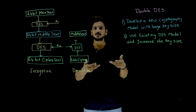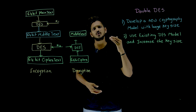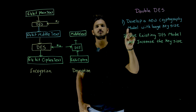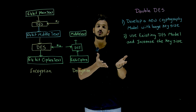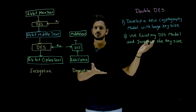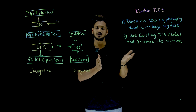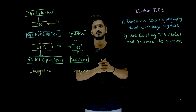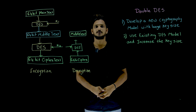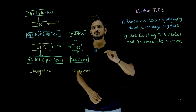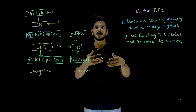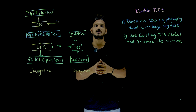So in order to increase the size of the key, we can do it in two ways. The first one is you develop a new cryptography model — why do we need to use DES? We can go with a new model with a large key size. Suppose you take 56 plus 56 = 112, a 2 power 112 possibilities key. If your key size is 112, it is going to take 2 power 112 possibilities. This is one way. But the second way is to use the existing DES model and try to increase the size of the key.